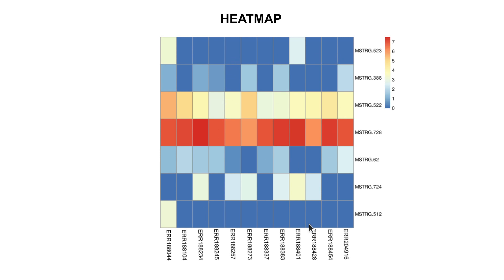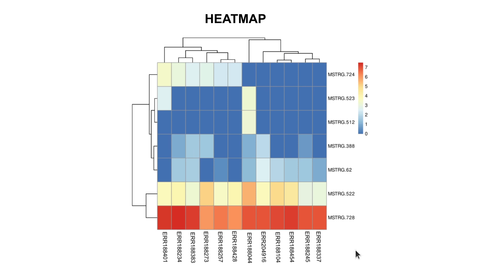If you combine heat maps with clustering methods, you can identify groups of genes or transcripts with similar expression patterns. This helps identify genes that are commonly regulated and biological signatures associated with a particular condition. Looking at the heat map here, there are two main clusters: cluster one with high expression levels and cluster two with comparatively lower levels.